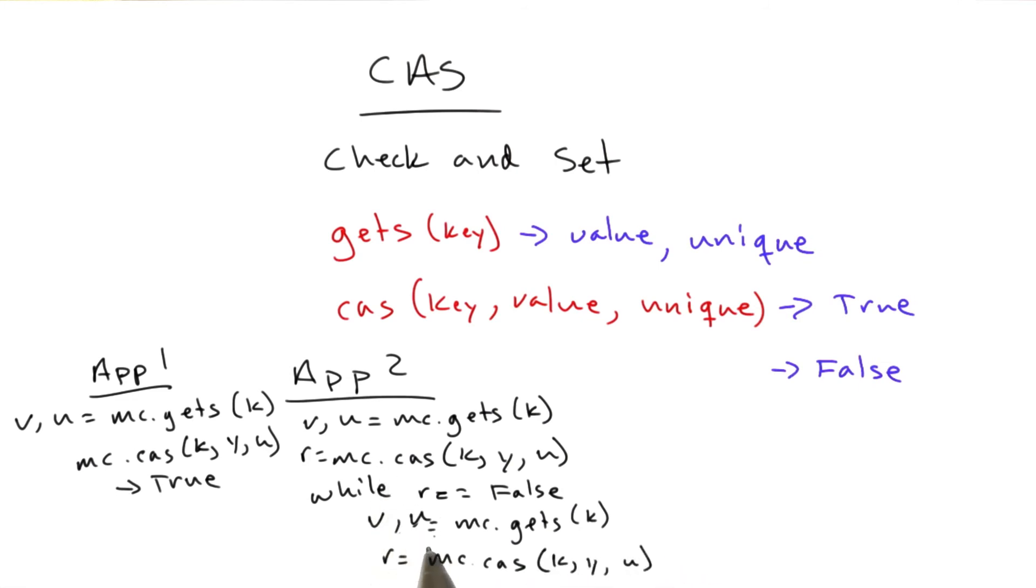So you have this loop where you basically get the new unique out of Memcached and then try to set it. And then once the unique that you got out of Memcached matches the one that's stored in Memcached now, you know that you made the correct edit.